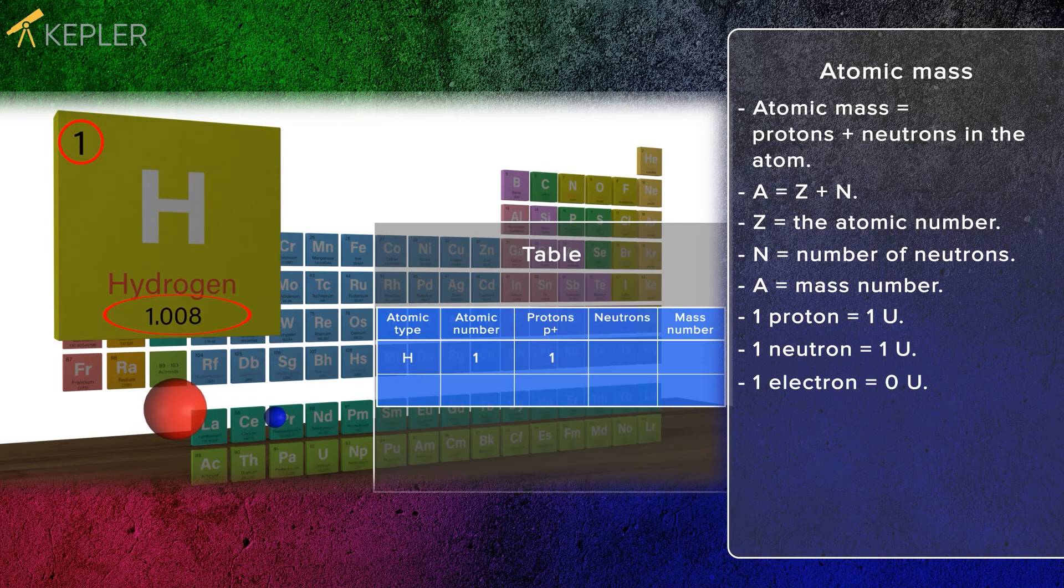Because there are no neutrons in hydrogen, the number 0 is written below neutrons. The number of protons plus number of neutrons equals mass number. Therefore, the hydrogen's mass number is 1.